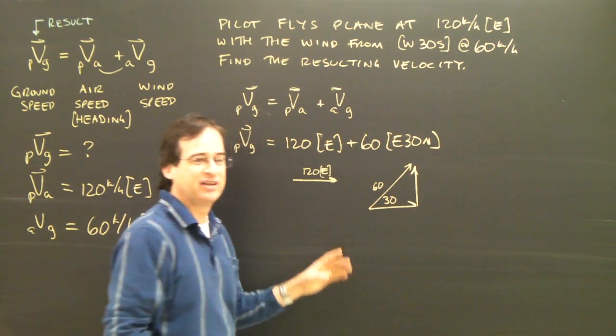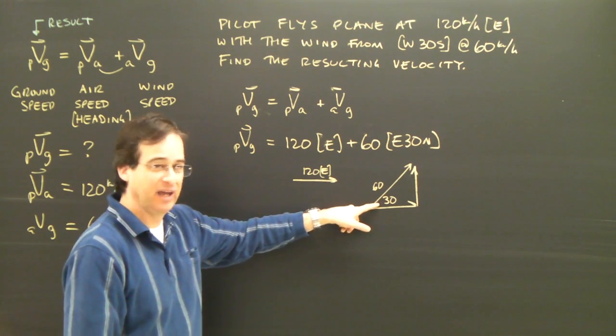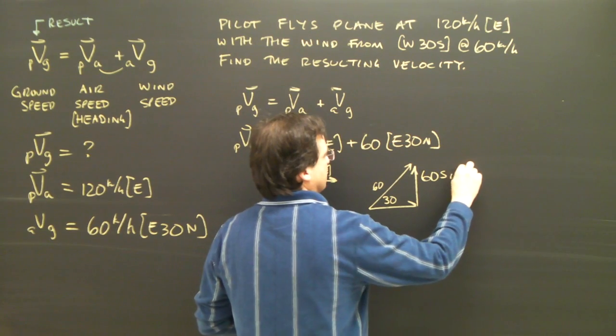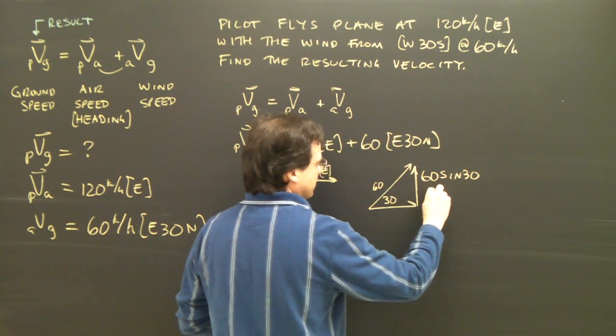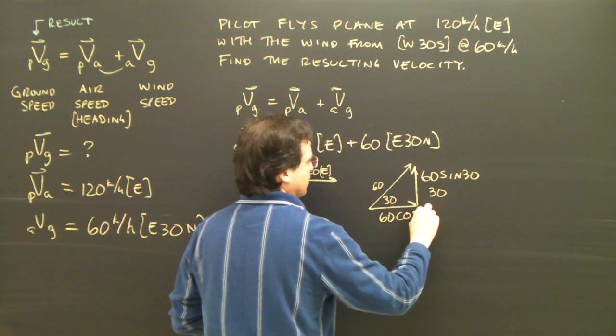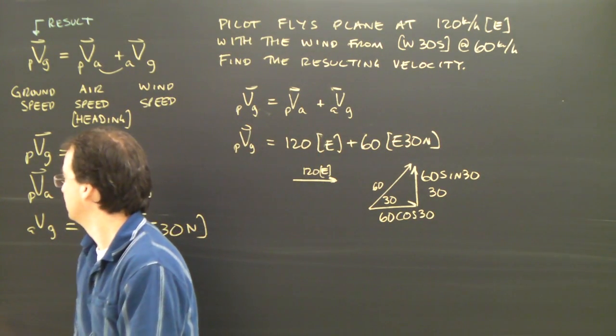I need to break that up into x and y components. Here's my 60. There's my angle. So this is 60 sine 30, which is 30. This is 60 cosine 30, which is 52.